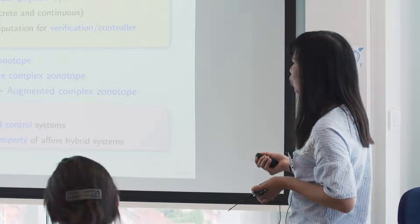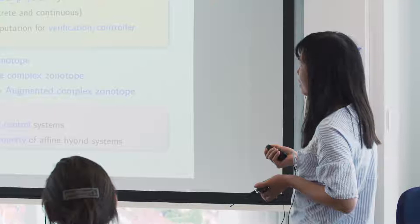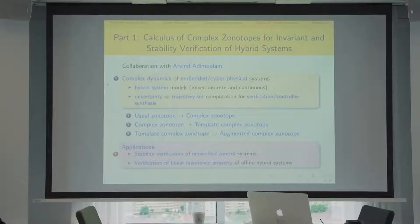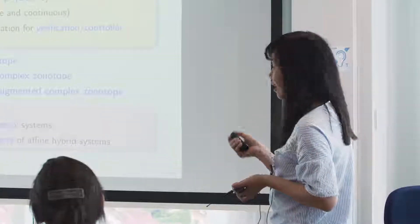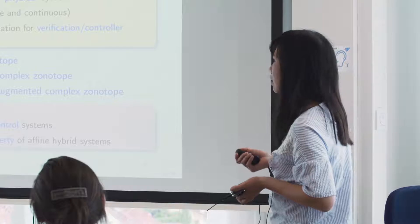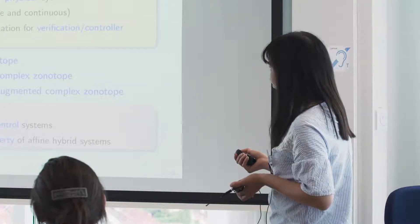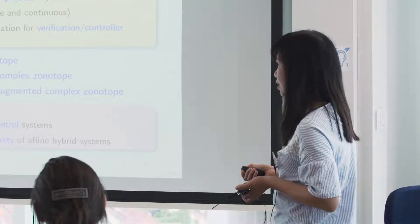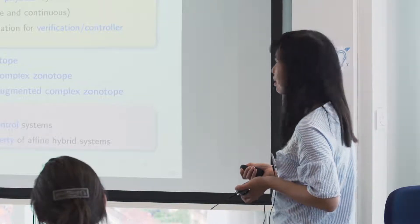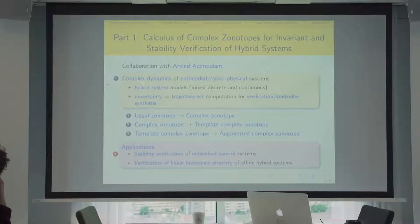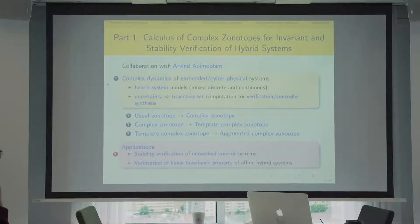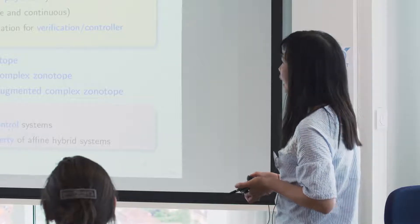This is why we need symbolic representations of sets in formal verification. In this talk I will present one particular set representation — there are many, and I will give a brief review. The idea is to start with a popular set representation called zonotopes, then move to complex zonotopes, and then to template complex zonotopes for better accuracy of approximation.